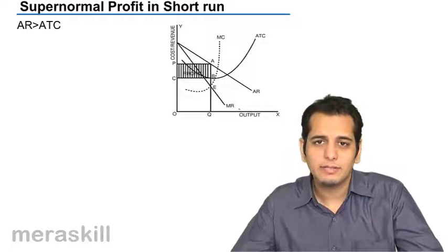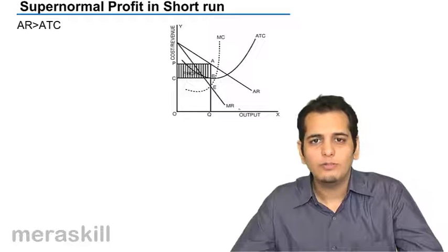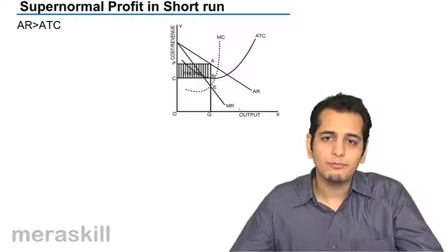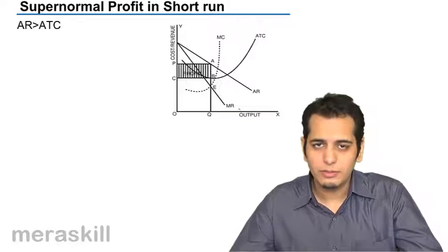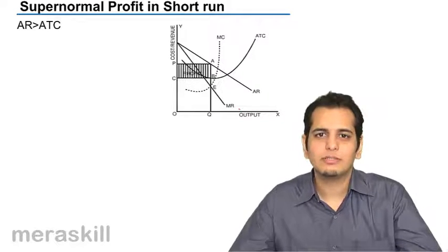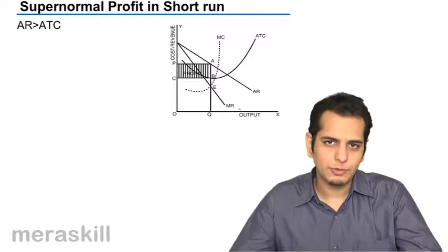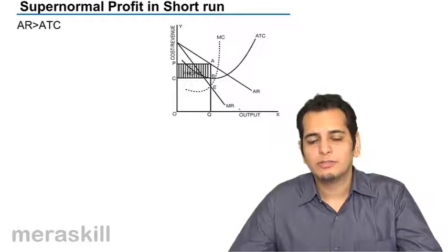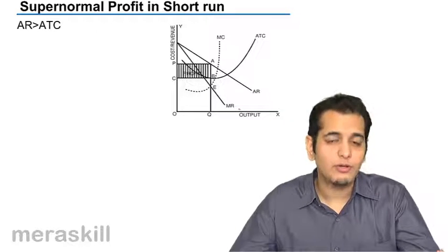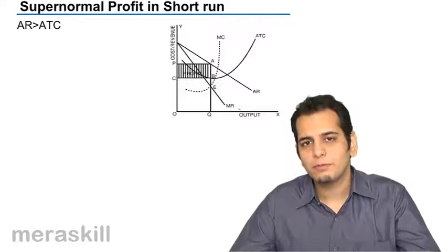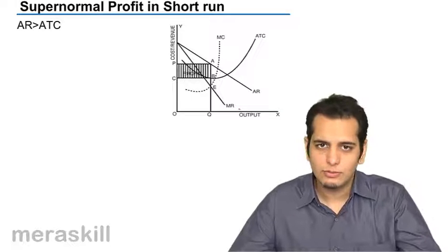Now let's try to understand how a firm operating in a monopoly will get supernormal profits. This word supernormal profits is for accounting purposes only. As far as economics is concerned, supernormal profits does not exist in economics. In economics it is the normal profits, but for accounting purposes we use it as supernormal profits.